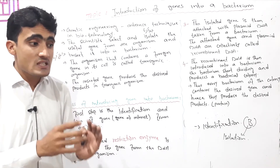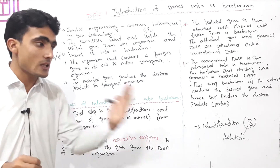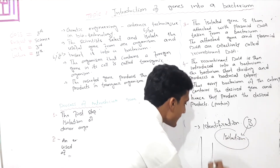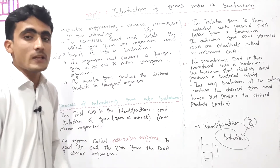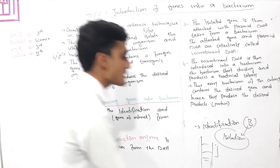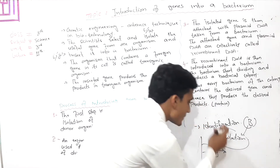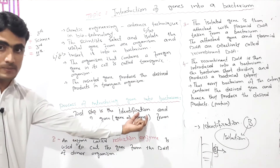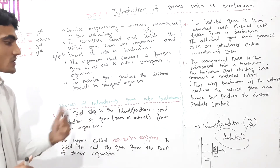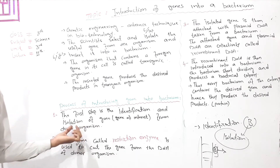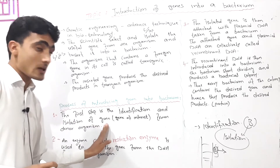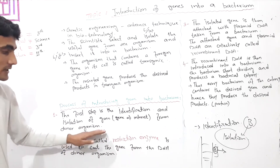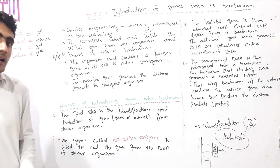If you have a specific character, you can control your genes. The scientist isolates that gene from the organism — that is why it is called the donor organism. If you have DNA, it contains different types of genes. You isolate your specific genes — for example, B genes for productivity — from the donor organism.